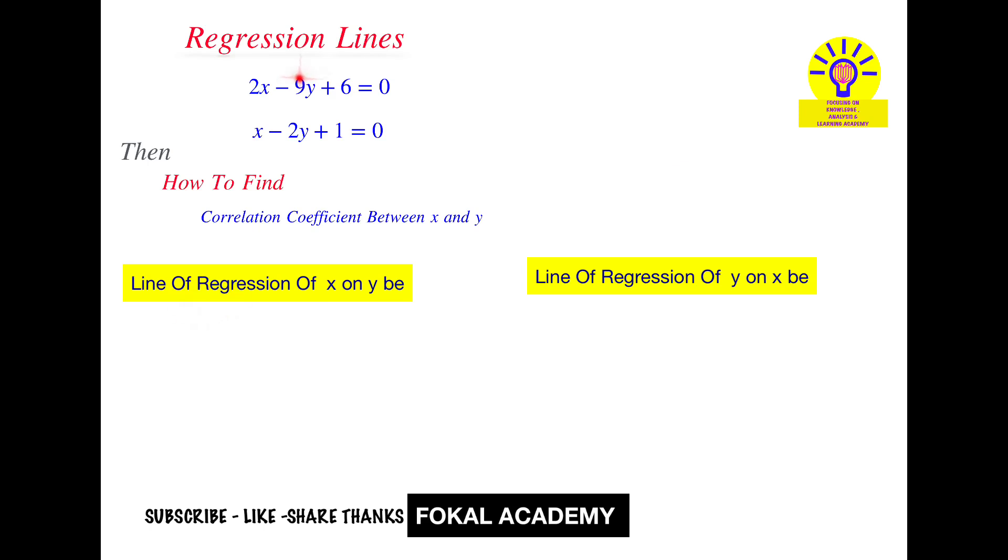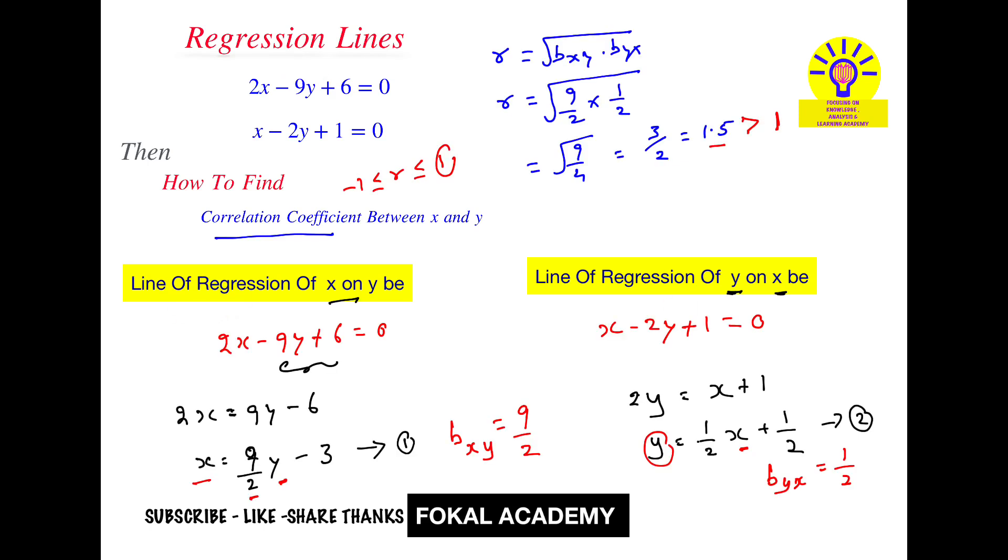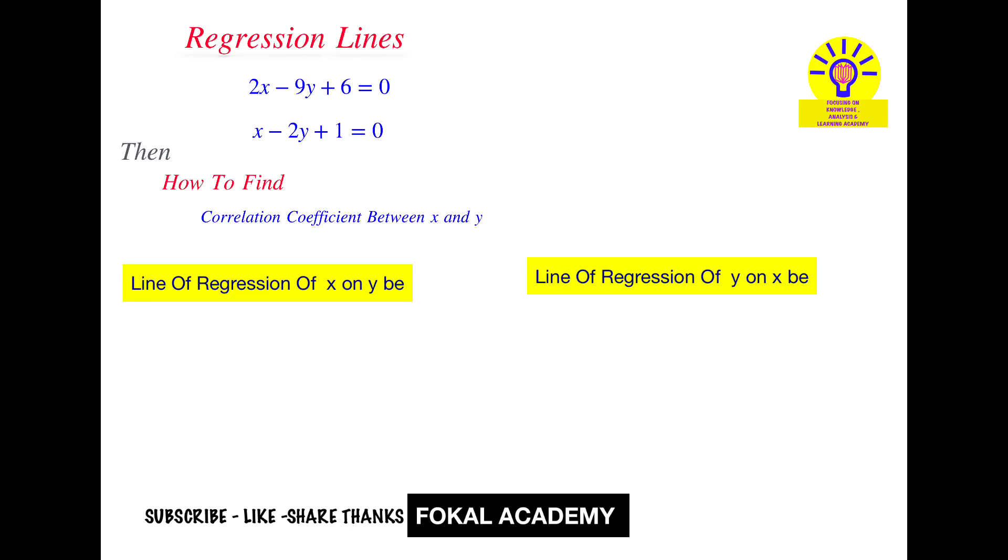Now again, write. Take this equation here. Previously I took this equation, from this I got x on y. Now take 2x minus 9y plus 6 as y on x. 2x minus 9y plus 6 equal to 0. Here x minus 2y plus 1. So from here, x equal to 2y minus 1.